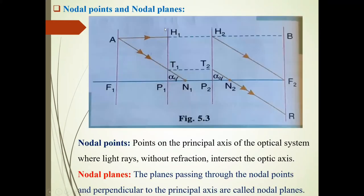See from this diagram, H1P1 is first principal plane, H2P2 is second principal plane. Here P1 is first principal point, P2 is second principal point. Here F1 is first focal point, F2 is second focal point. The plane passing through this F1 is first focal plane, plane passing through F2 is second focal plane.